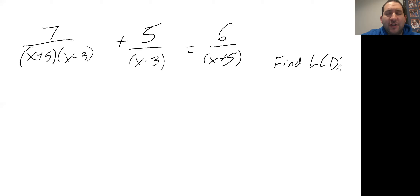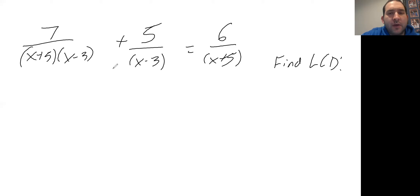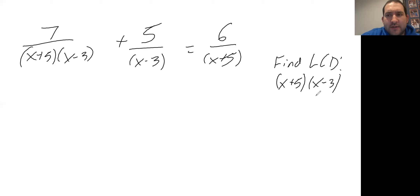To find the least common denominator when we have a bunch of different binomials in the denominators, we want to make sure we include each of the binomials one time. So looking at our problem, X plus five is included and X minus three is included — that takes care of all the binomials in the denominators. So our least common denominator is (X + 5)(X − 3).